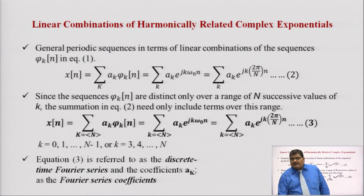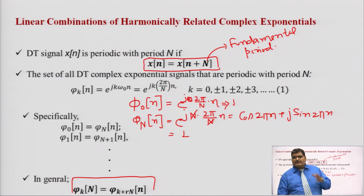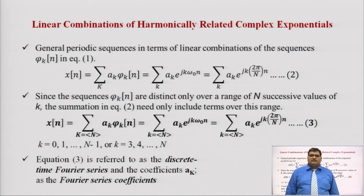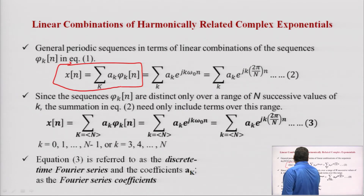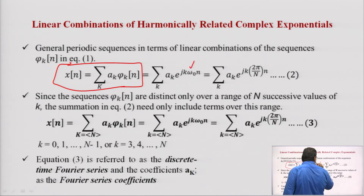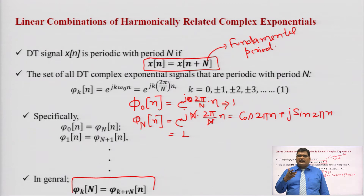The second thing is: before this, the equations φ₀, φ₁, φ₂ — if we take their linear combination, that is a₁φ₀(n) + a₂φ₁(n) + a₃φ₂(n) and so on — the linear combination of φ₀, φ₁, φ₂ added together can be written as summation of a_k · φk(n), which equals summation of a_k · e^(j k ω₀ n), where ω₀ = 2π/N. This becomes equation number 2.